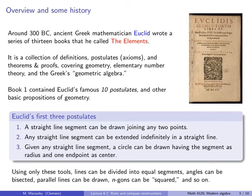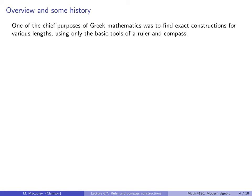Using only these tools, the ancient Greeks discovered that lines can be divided into equal segments, angles can be bisected, parallel lines can be drawn, n-gons can be squared, and many other basic geometric constructions can be done. One of the chief purposes of ancient Greek mathematics was to find exact constructions for various lengths using only the basic tools of a ruler and a compass.